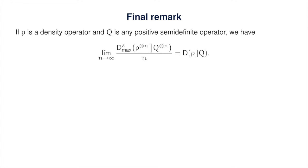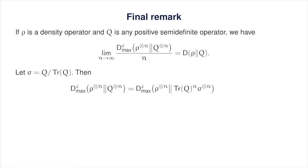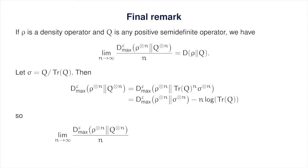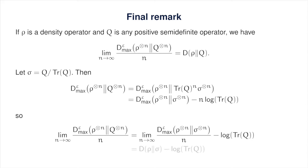In particular, suppose q is any non-zero positive semi-definite operator, and let sigma be the density operator proportional to q. You can verify that the smooth max relative entropy of rho tensor n with respect to q tensor n is simply the smooth max relative entropy of rho tensor n with respect to sigma tensor n minus n times the log of the trace of q. In a nutshell, the max relative entropy, the smooth max relative entropy, and the ordinary relative entropy all behave the same way with respect to rescaling the model. And that's one more lecture in the bag. Feel free to ask questions if you have them.